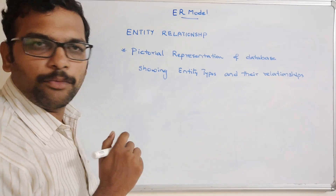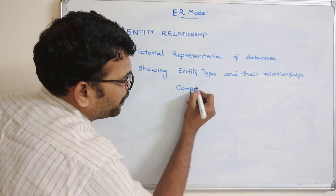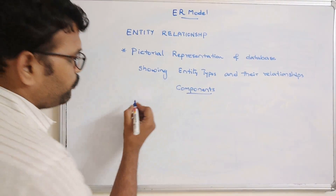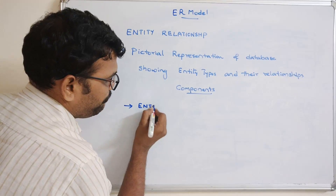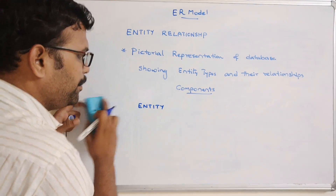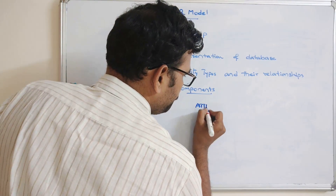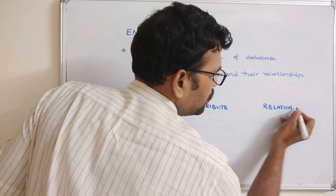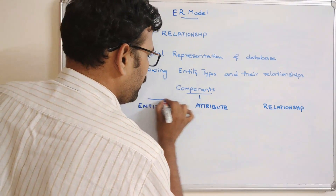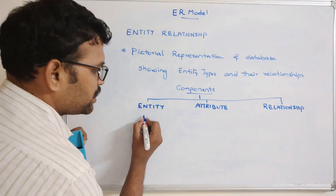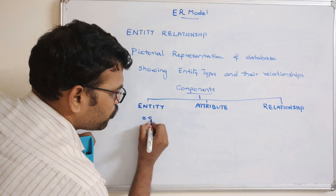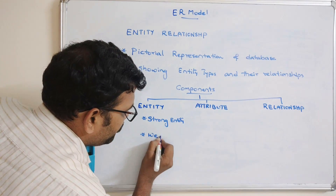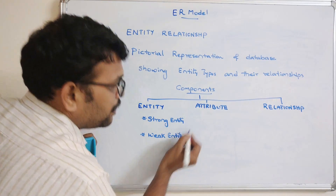What are the components of this ER model? The components of the ER model are: first, entity; second, attributes; and third, relationship. These three are the major components of any ER diagram. We have studied about entities — what is a strong entity and what is a weak entity.